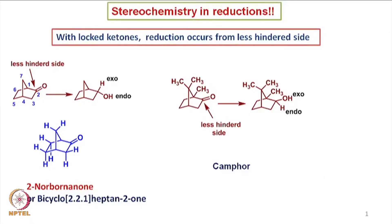Now we see the stereochemistry in reductions of ketones. If we take locked ketones, reduction occurs from the less hindered side. For example, if we take a bicyclic ketone — 2-norbornanone, also called bicyclo[2.2.1]heptan-2-one — and we look at the positions of hydrogen around the carbonyl group, we find that the endo side of the molecule is sterically more hindered than the exo side. There are three endo hydrogens at the lower side, whereas there is only one hydrogen blocking the carbonyl face from the exo side.